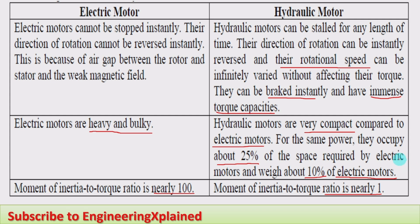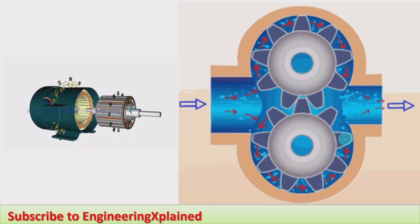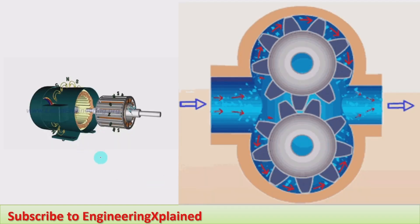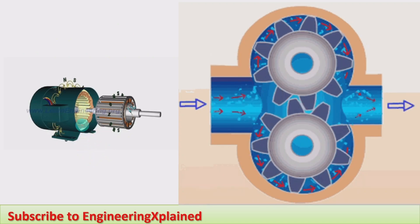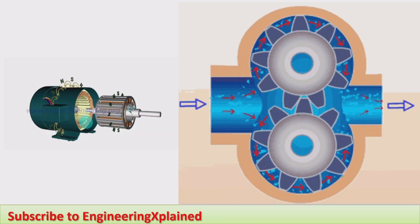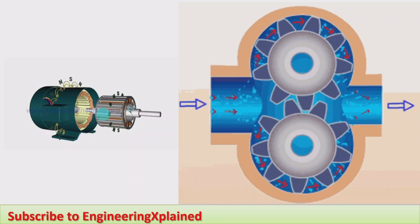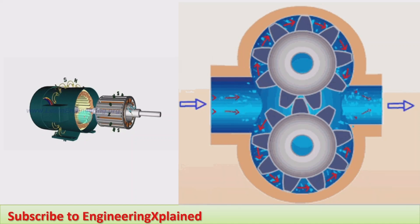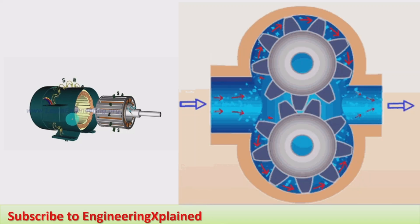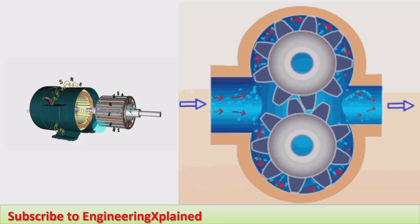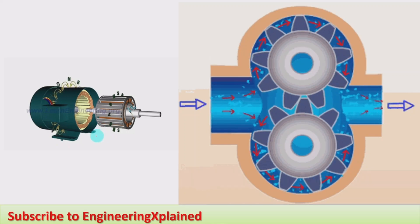These are the points by which we can compare the electric motor and hydraulic motor — both produce mechanical rotary power for various operations. Regarding how they work: the electric motor operates by a magnetic field. There is a stator and a rotor inside, and by Faraday's law, when electricity is supplied to the stator, the rotor rotates. That is the principle of operation of the electric motor.